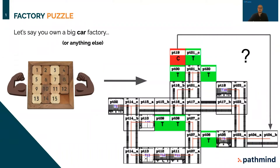Before we dive into any specific software, let's talk about a real world example first. Let's say you have a car company with a large factory grid and your cars have to go through several production steps. If you have a lot of cars produced in a factory, you'll face the question: how do I move cars efficiently from A to B? As your factory gets more crowded, this might begin to resemble a very complicated 15 puzzle of sorts.